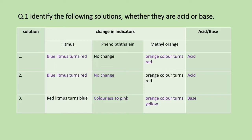For solution three — red litmus turns blue, phenolphthalein changes from colorless to pink, and methyl orange turns yellow. So it is a base.